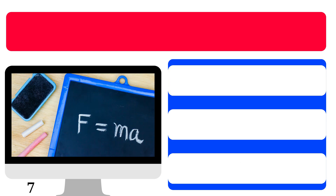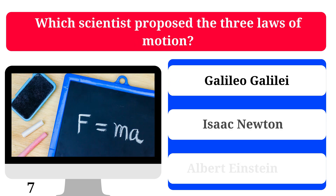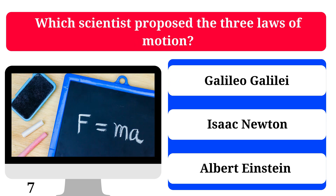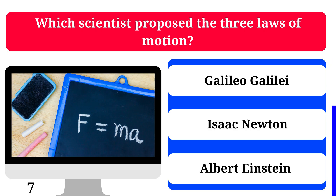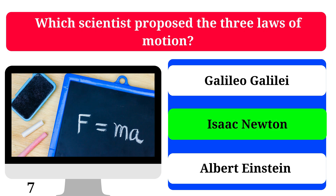Which scientist proposed the three laws of motion? Galileo Galilei, Isaac Newton, or Albert Einstein? The correct answer is Isaac Newton.